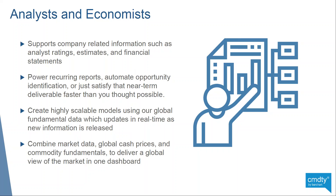Not everybody is a trader or grain merchandiser — there's a lot of people doing research, and this is a great tool for those folks as well. It supports not just commodity data but also company-related information. For Apple, what's the latest analyst rating? What are the earnings estimates? And if you tie this back into commodities — British Petroleum, BP, Shell, Exxon — all publicly traded companies, you can take a look at what's the latest going on with their financials right next to crude oil export data, rig counts, and perform that sort of analysis that previously you just couldn't.